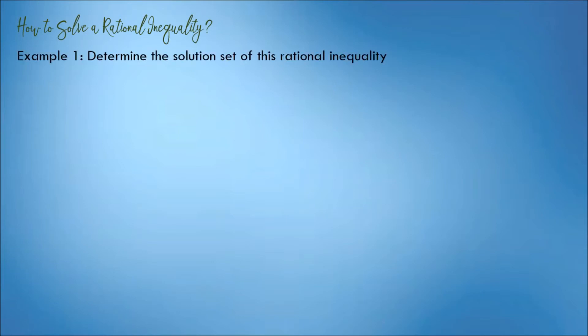For example, determine the solution set of this rational inequality: (x squared minus 4) all over x, is greater than or equal to 0.